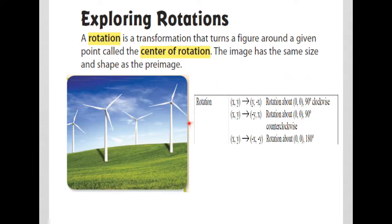Hopefully you can see this part — I gave you these formulas earlier in the definition paper video. These are the formulas we're going to use when dealing with rotation, especially when rotating about the origin. From my knowledge, on your state test you will be looking at transformations rotated about (0, 0), where one point stays at the origin and you move the figure either counterclockwise or clockwise.